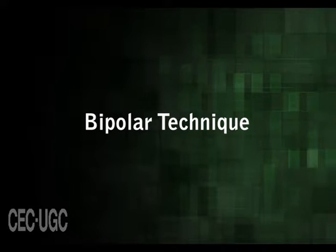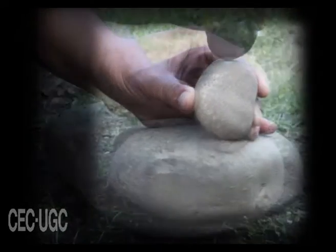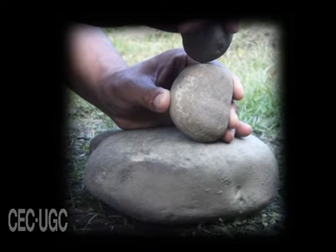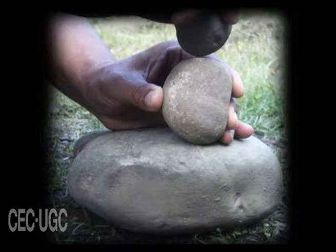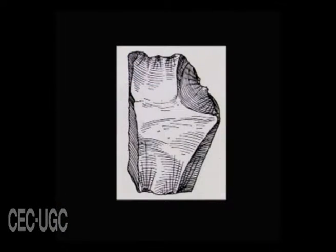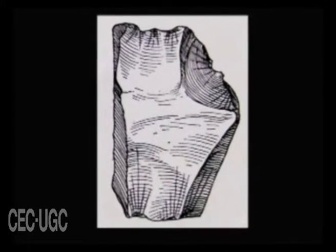The bipolar technique of flaking is less common, but it is considered economical in the sense that with a single blow two flakes could be detached simultaneously. The core is placed upon another hard rock and struck with the hammer on the upper free end of the core. Due to the rebound of force from the underlying rock and the force of the hammer blow on the upper end, two flakes, one from each opposite end, are removed on the same face of the core. The presence of radiating fissures on the same face at opposite ends is the identifying character of the bipolar technique.